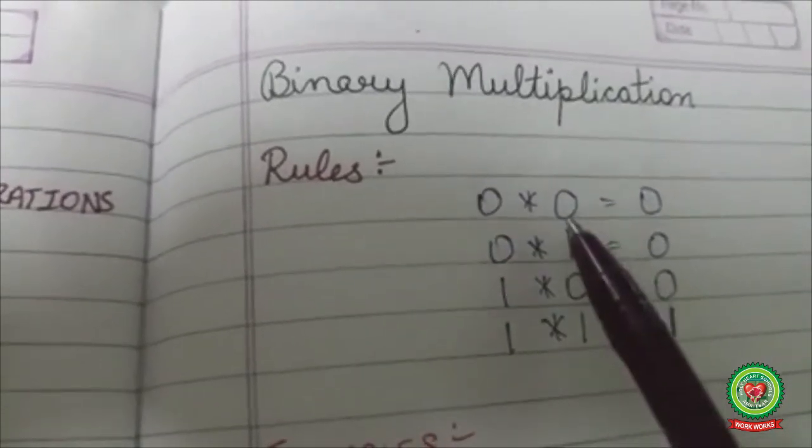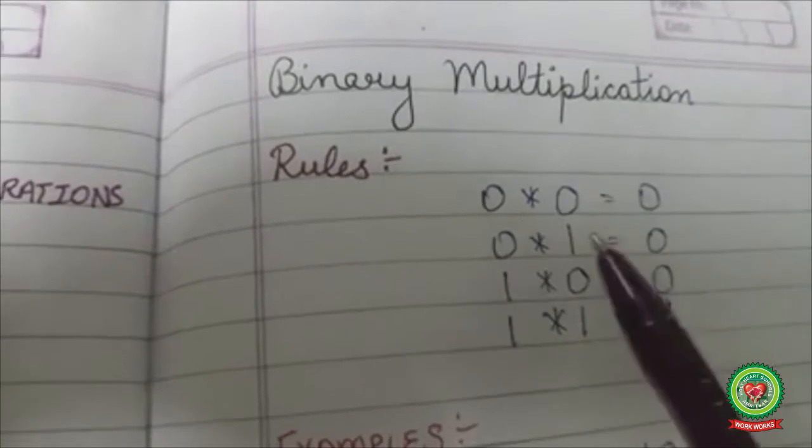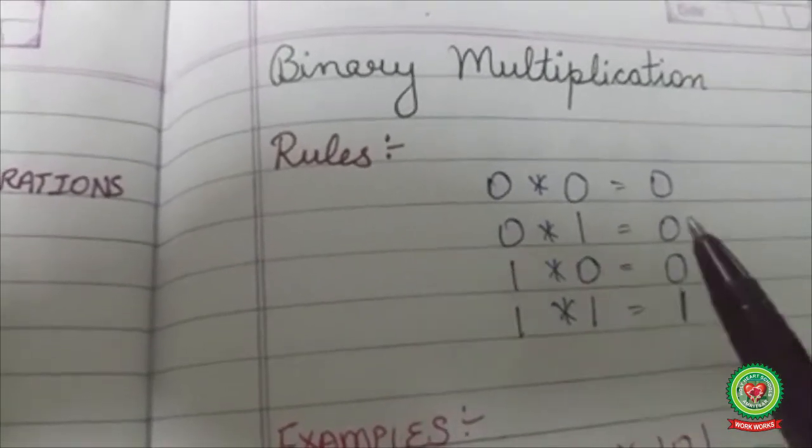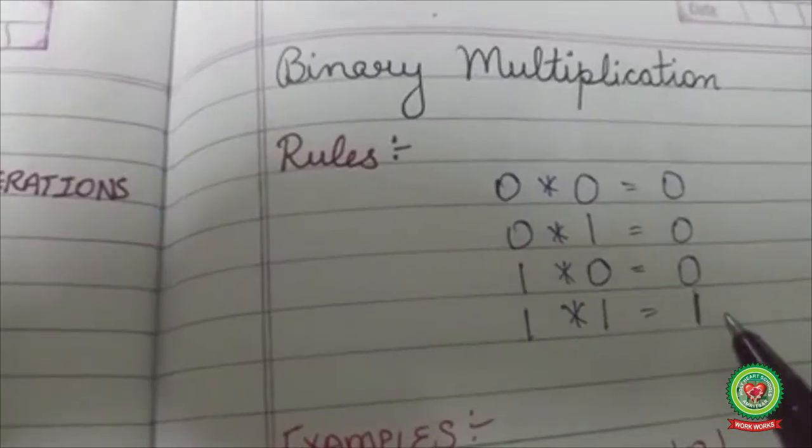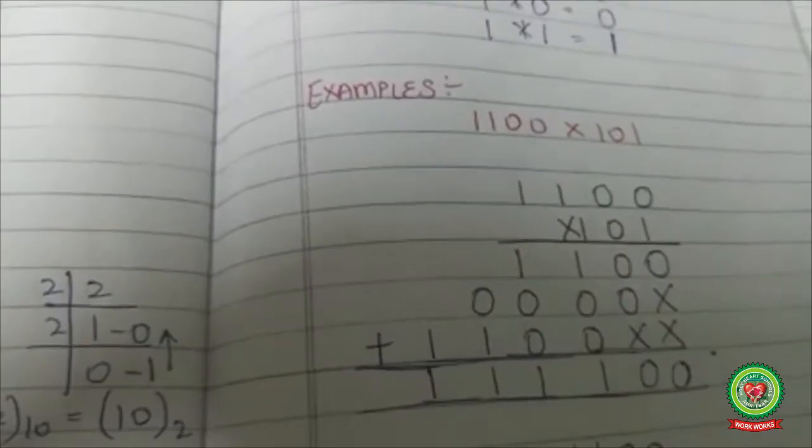So 0 times 0 is 0, 0 times 1 is 0, 1 times 0 is 0, and 1 times 1 is 1. Now let's do an example.